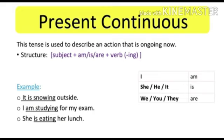Further, we will talk about present continuous tense. This tense is used to describe an action that is ongoing now. Structure: subject plus am/is/are plus verb with -ing. For example: it is snowing outside; I am studying for my exam; she is eating her lunch. Remember: with I, we use am; with he, she, it, we use is; and with we, you, they, we use are.